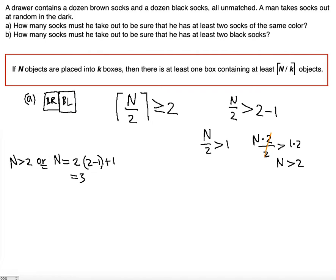So just as we suspected, we need to find the least N value. So N is equal to three. Three is going to be the number of socks that must be taken out to be sure that there's at least two socks of the same color.